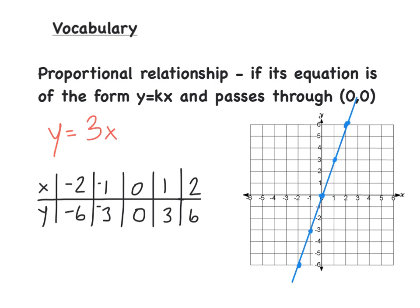A relationship is proportional if its equation is in the form y equals kx and it passes through the origin, 0, 0. So we need these two things: it needs to be in the form y equals kx and it must go through 0, 0. Those are the two main parts.